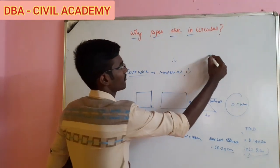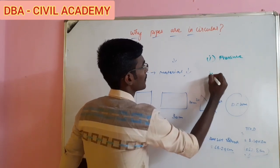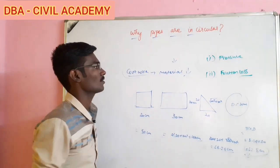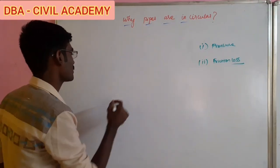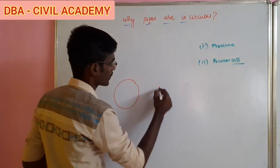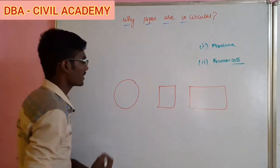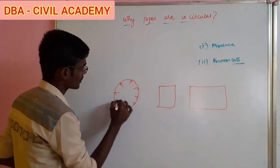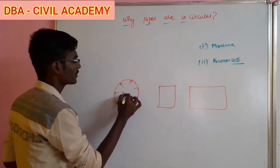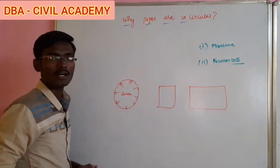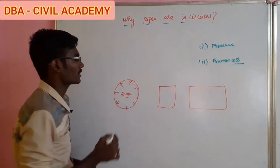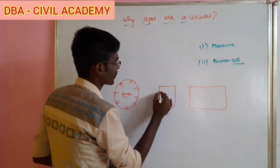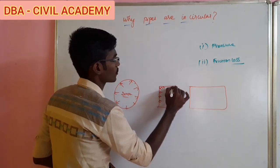Pressure is an important factor. The second factor is friction loss. Pressure acts differently on a circular shape versus a square or rectangular shape in a pipe. If you look at the circular shape in a pipe, the circumference will have even pressure distribution. The circular structure will withstand the pressure evenly.